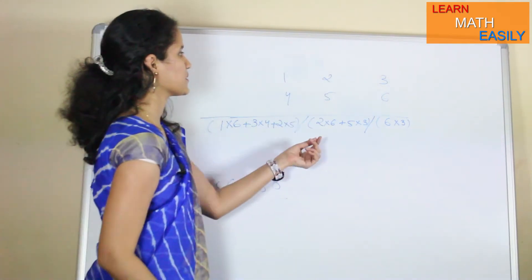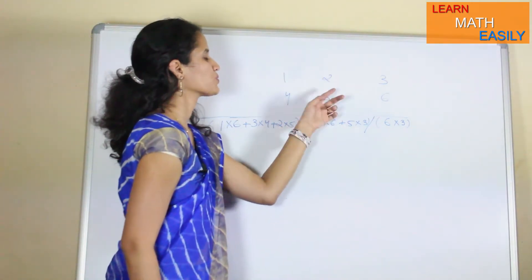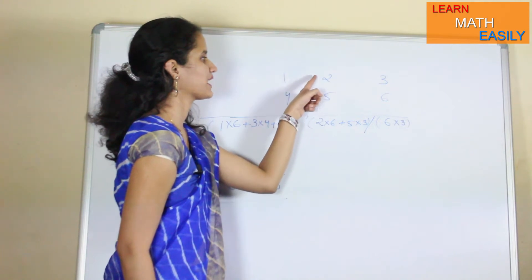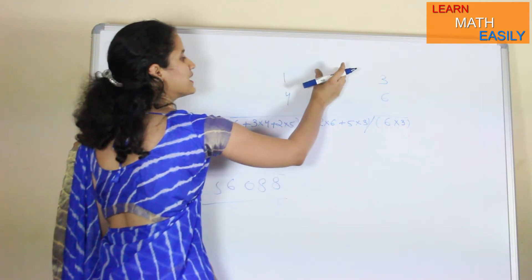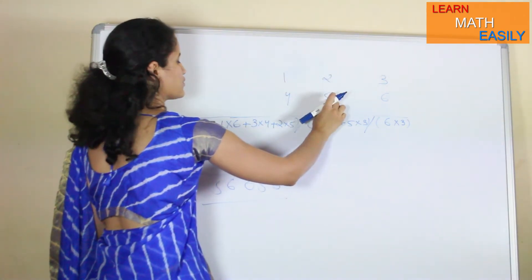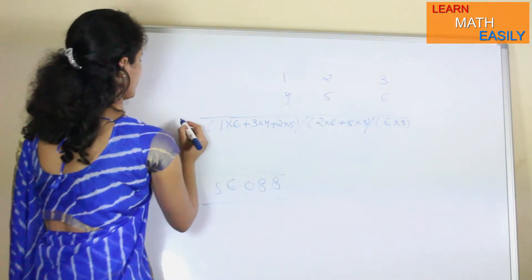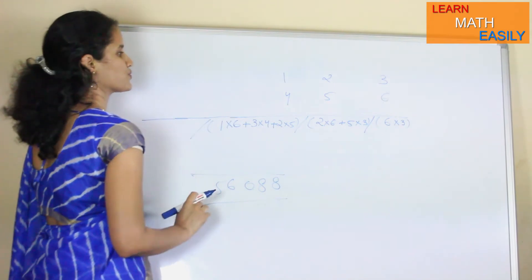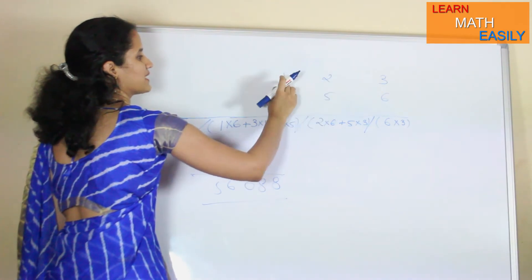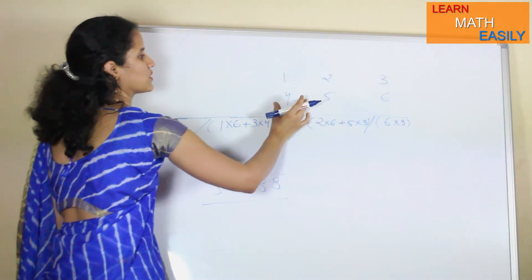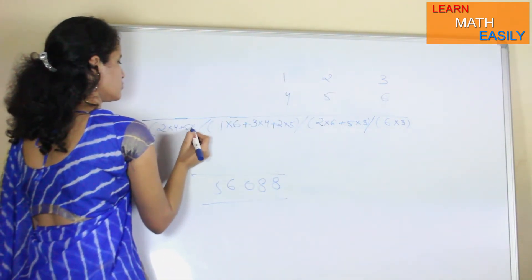In the third step, we are multiplying the first column with the third column, but we can't skip the middle terms, so those terms must get multiplied with each other. We are multiplying 3 with 4 and 6 with 1. So: 1 into 6 plus 3 into 4 plus 2 into 5. In the fourth step, you multiply the second column with the third column: 2 into 4 plus 5 into 1.